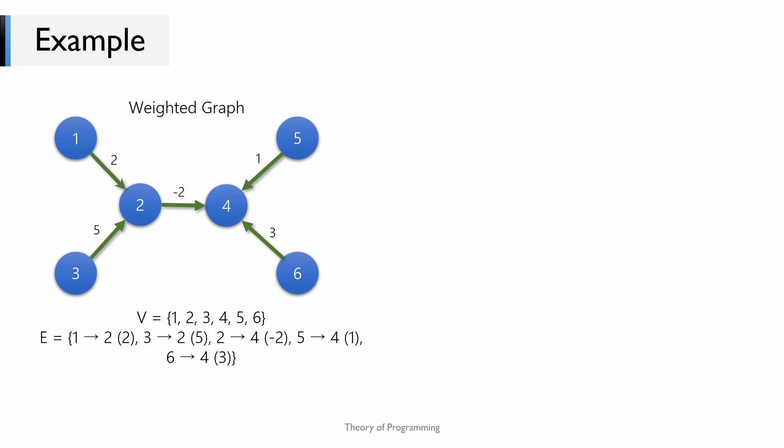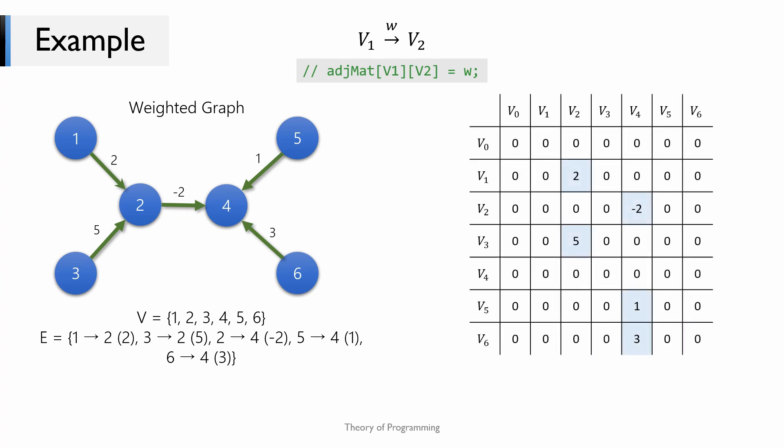Let us look at another example of an adjacency matrix — this time a weighted graph. The process is pretty much the same; the only difference is that instead of populating our matrix with 1s, we assign the weights for each edge, and the rest of the entries still remain 0. So for an edge V1→V2 of weight W, we set adjacency_matrix[V1][V2] = W. For this weighted graph of six vertices and five edges, the adjacency matrix would look like this.